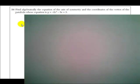Okay, number 34, now we're into part 3. So these problems are worth a little more. 34 says, find algebraically the equation of the axis of symmetry and the coordinates of the vertex of the parabola whose equation